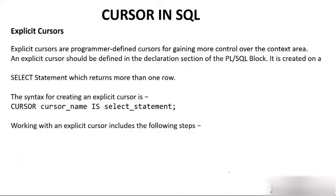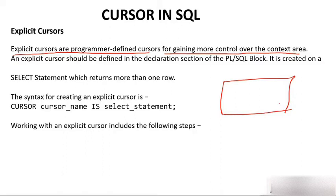Then comes the very important explicit cursor. Implicit cursors are cursors we have no control over. Explicit cursors are programmer-defined cursors, defined by the programmer to gain more control over the cursor context area. Oracle creates a context area — that is memory area — and that memory area is pointed to by cursor. In order to get more control on this context area, we create an explicit cursor.